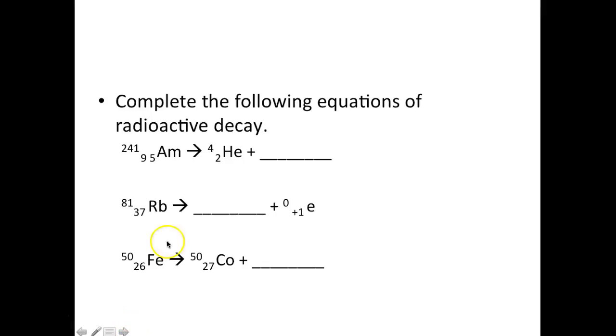Complete the following equations: Americium-241 (95) produces neptunium-237 (93). Rubidium-81 (37) - this new element would be element number 38, which is strontium. So it's strontium-81 (38).